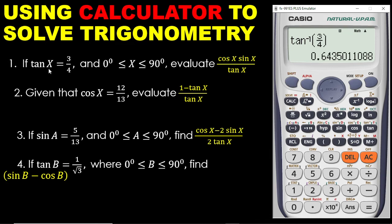The question says if tan X, so it means we have to save this to any of the alphabets. Because I have tan X here, I want to save this to X. To do that, you press Shift, you press Store, and then you press X. I have now saved my answer to X.